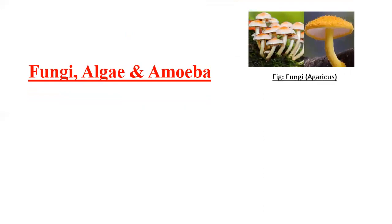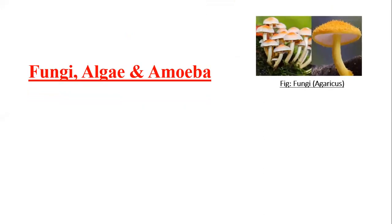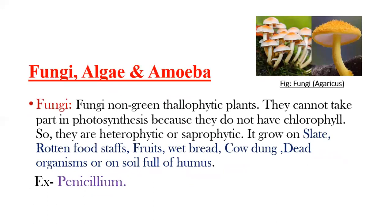Let's know about fungi. Fungi are non-green thallophytic plants. They cannot take part in photosynthesis because they don't have chlorophyll. So they are heterotrophic or saprophytic. They grow on sleds, rotten foodstuffs, fruits, wet bread, cow dung, dead organisms or on soil full of humus. For example, Penicillium. Now we discuss the economic importance of fungi. We get many valuable medicines including penicillin from fungi.